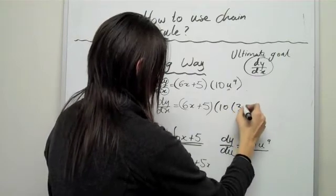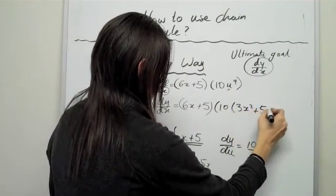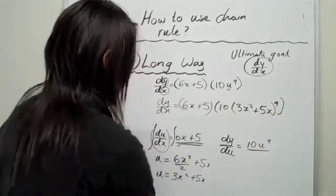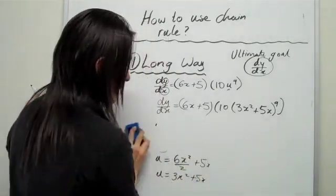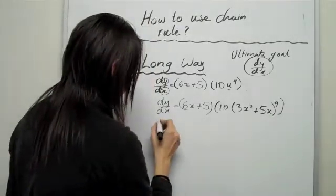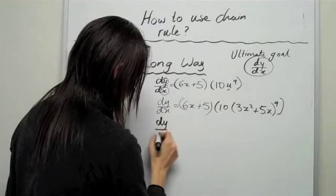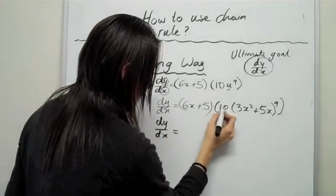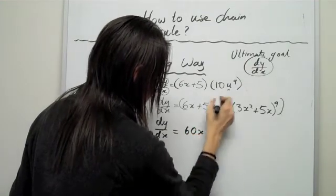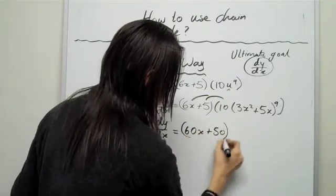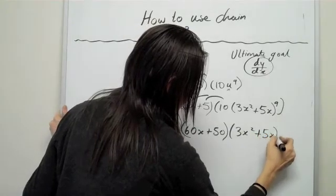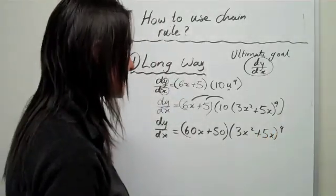3 to the power of 9. And I suppose the hardest bit of this stuff is to actually work out how to simplify this. So, we've got dy over dx equals 2. You can see that it's going to be 60x plus 50. I'm just multiplying this 10 here. And that's one bracket. And then you can write 3x squared plus 5x to the power of 9. So, that's what our derivative is going to be.